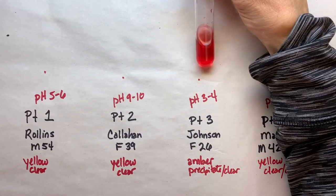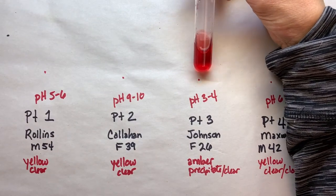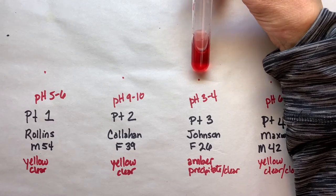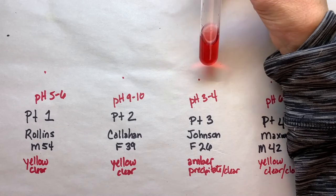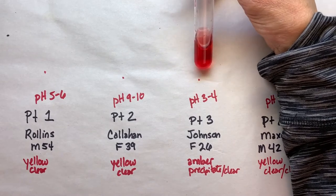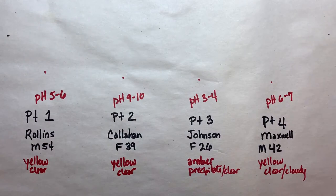Number three, that one is a definite positive there for the presence of protein. So our patient number three, Ms. Johnson, has protein in her urine that is a red. So red is a positive for the presence of protein using Biorett.